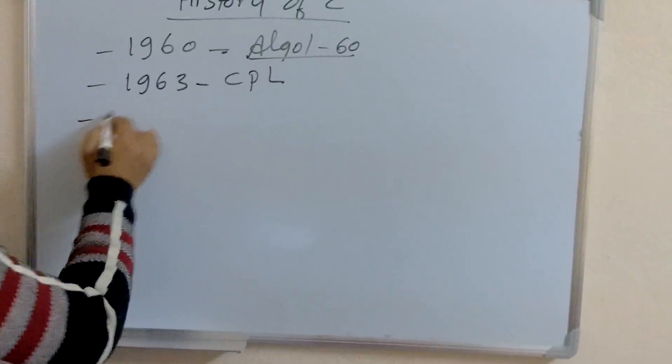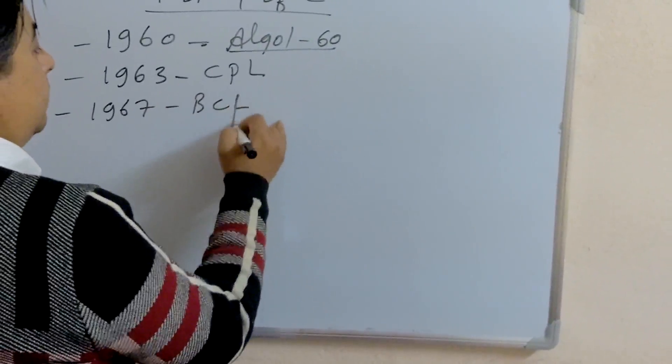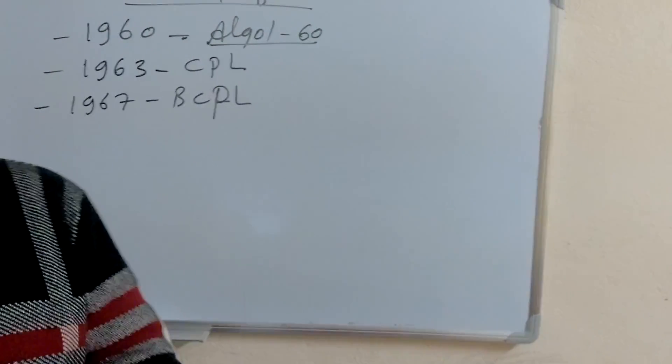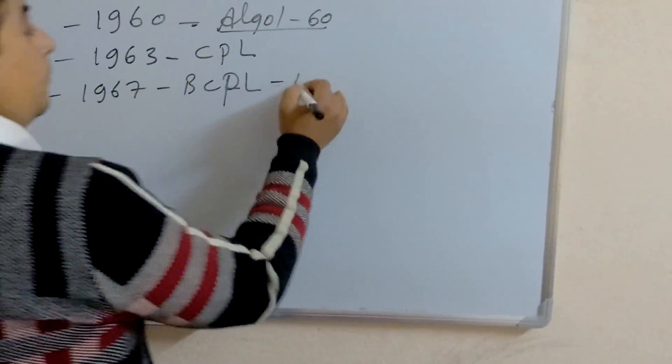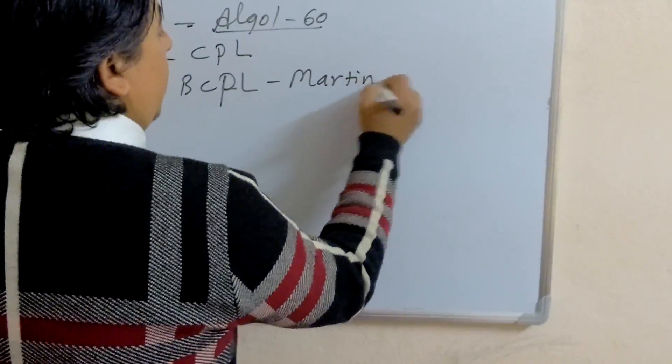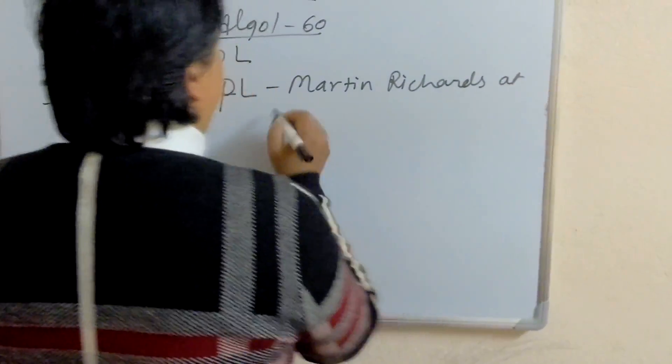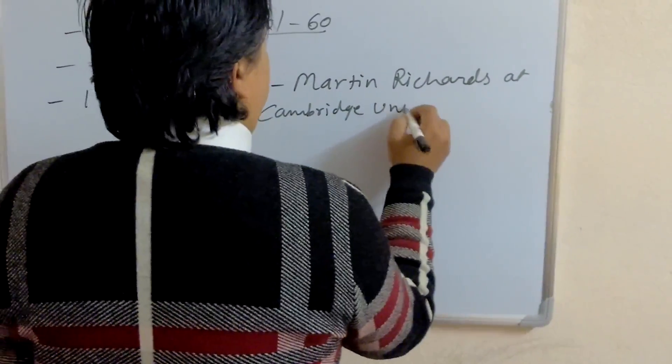In 1967, BCPL, Basic Combined Programming Language was developed. And it was developed by Martin Richards at Cambridge University.